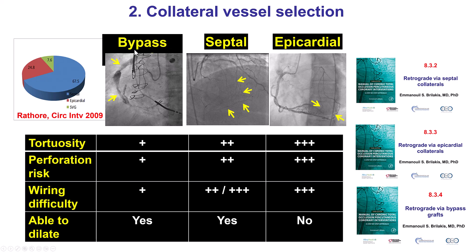Bypass grafts are preferred in most cases because they are often the easier to cross and have the least risk, followed by the septals. Epicardials are the ones with the highest risk, and that is why they are usually reserved until other options fail or are not available. There are separate videos that describe the specifics of crossing the various types of retrograde options.